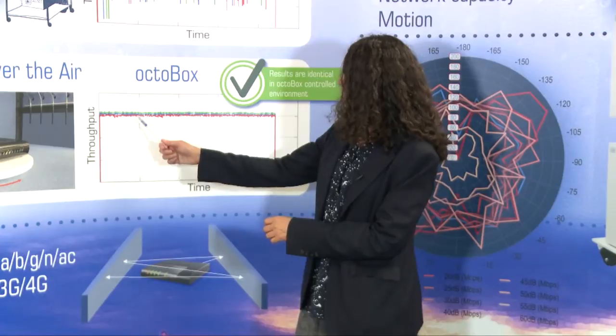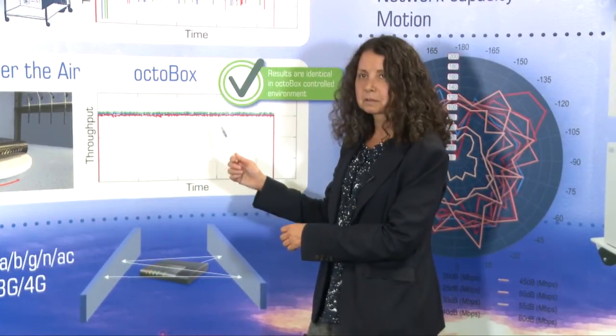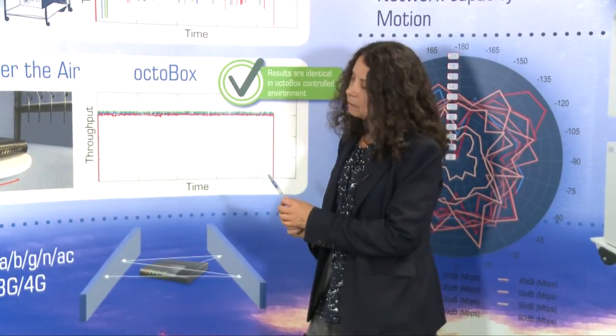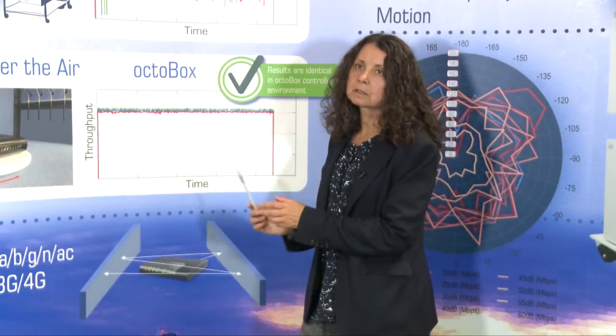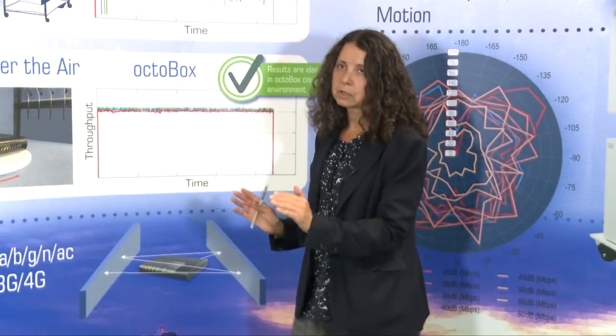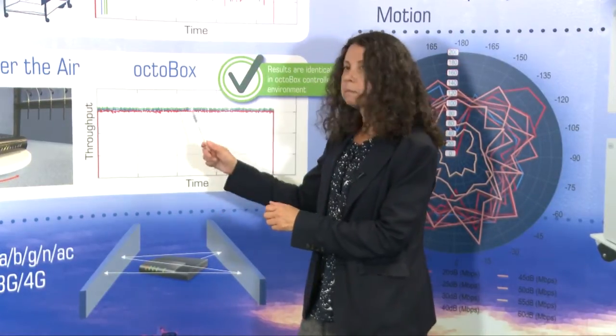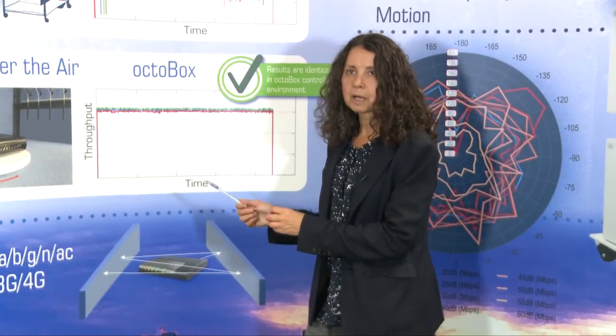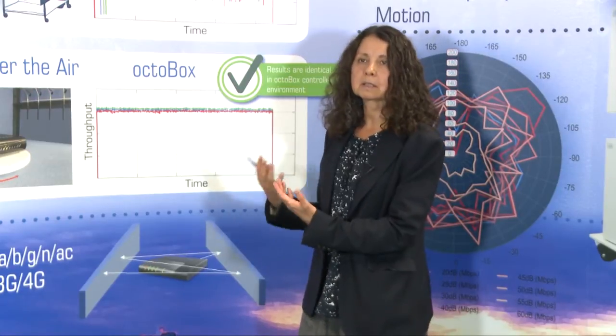In the Octobox, you will get the same identical results every time you measure. You will get the same identical results in multiple Octobox test beds, because we tune each one precisely to match the other. You will be able to introduce realistic multipath, realistic path loss, and realistic interference.